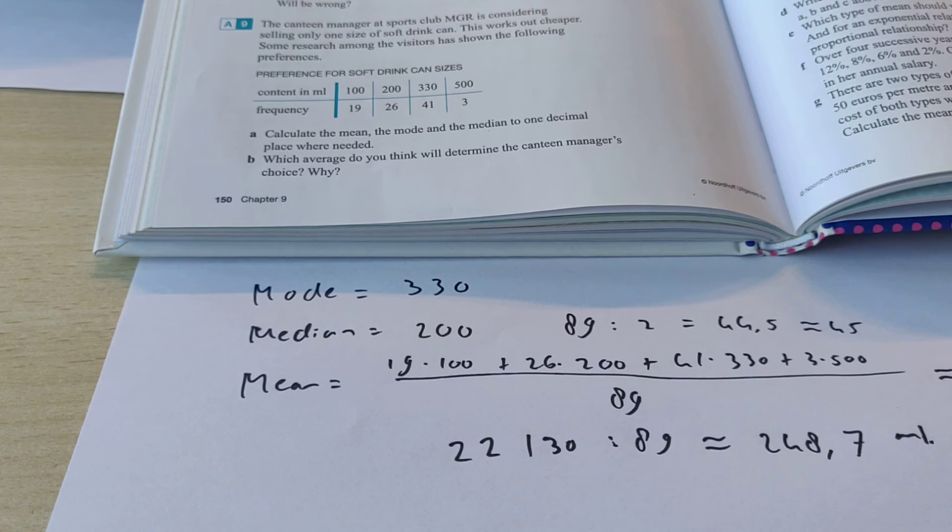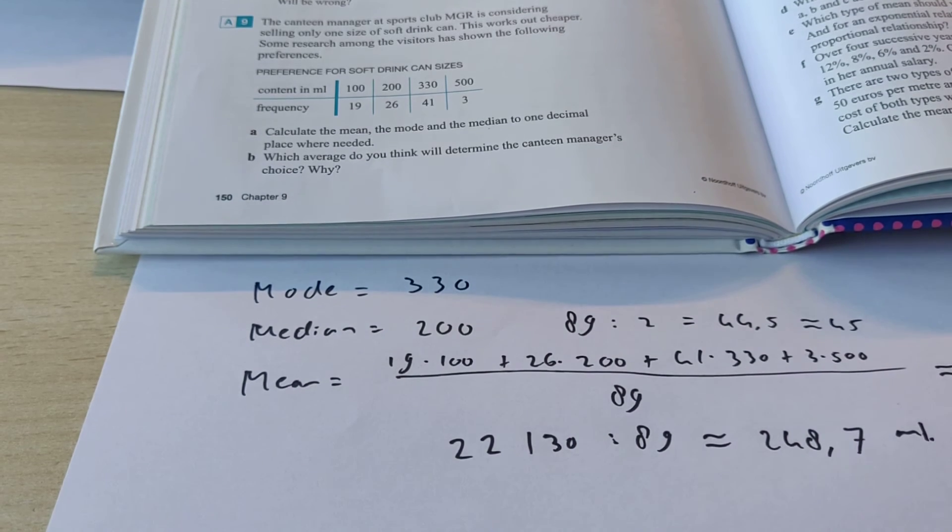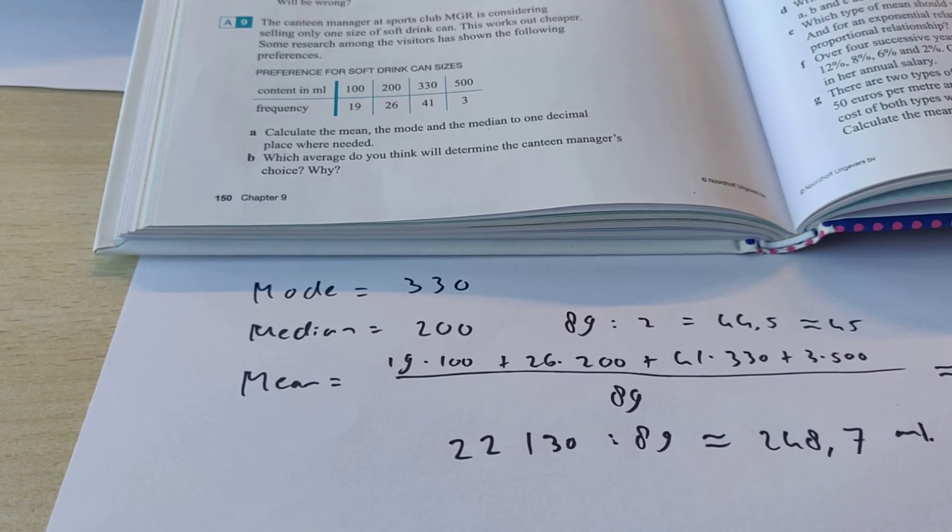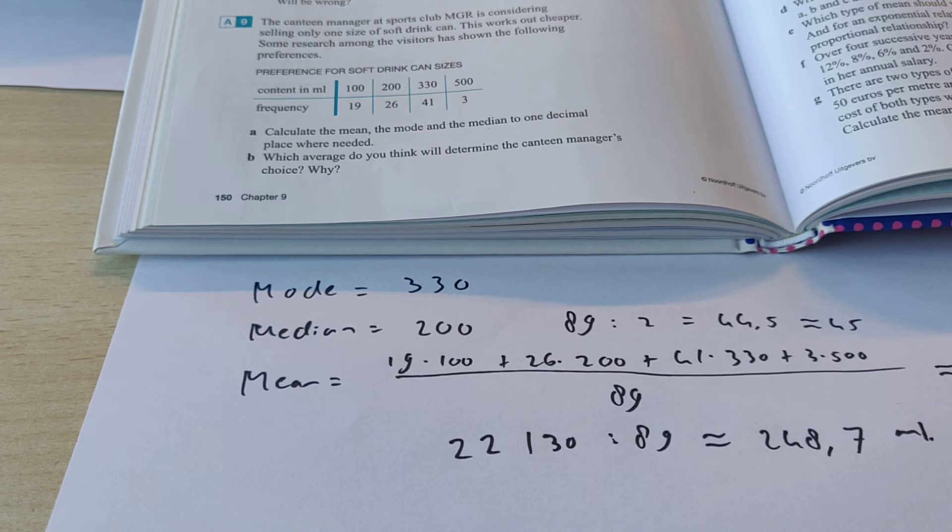So, these are the mode, median, and mean for question 9. Question B. Which average do you think will determine the canteen manager's choice? Why?